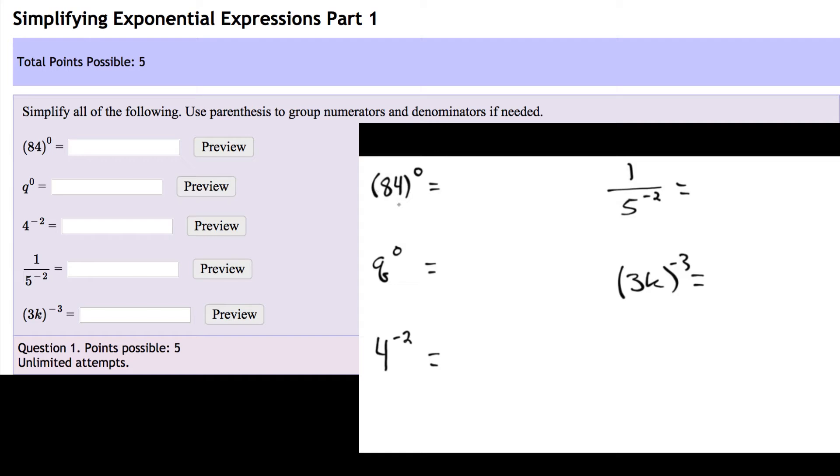84 to the power of 0, anything to the power of 0 is 1. Q to the power of 0, then, is also going to be 1, just to help us remember that anything raised to the power of 0 is 1.